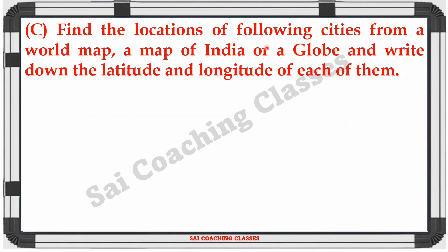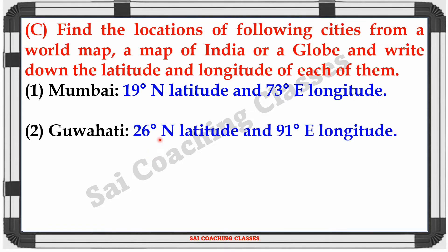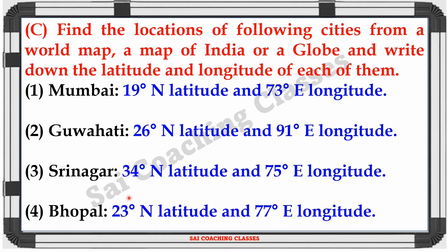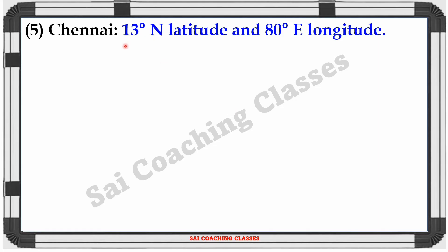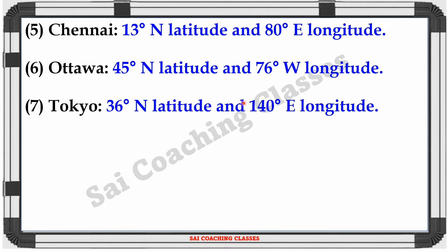Question C: Find the locations of the following cities from a world map, a map of India, or a Globe, and write down the latitude and longitude of each. Mumbai: 19 degree North latitude, 73 degree East longitude. Guwahati: 26 degree North latitude, 91 degree East longitude. Srinagar: 34 degree North latitude, 75 degree East longitude. Bhopal: 23 degree North latitude, 77 degree East longitude. Chennai: 13 degree North latitude, 80 degree East longitude. Ottawa: 45 degree North latitude, 76 degree West longitude. Tokyo: 36 degree North latitude, 140 degree East longitude.